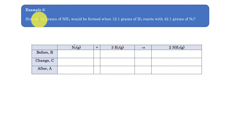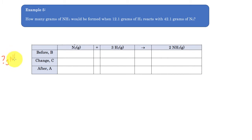First thing we want to focus on is what we're looking for. What we're looking for is the mass — in this case the grams — of ammonia. So we're going to start there.